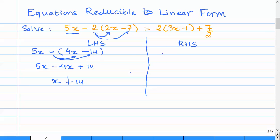Now let us look at the right-hand side. The same thing, what we'll do is we'll multiply 2 with 3x and we'll also multiply the 2 with minus 1. So we have 2 times 3 is 6x and 2 times minus 1 is minus 2 plus 7 by 2. Now this is what we have at this point in time.